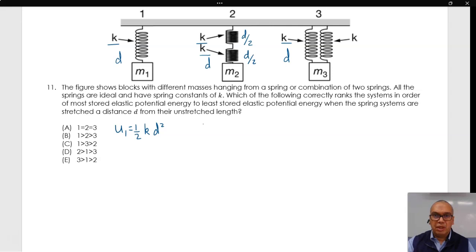the elastic potential energy is equal to the sum of one half k d over 2 squared plus one half k d over 2 squared. This is equal to one fourth k d squared or one half of the potential energy in the first case.